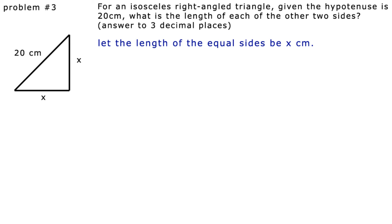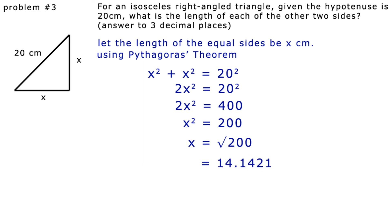And using Pythagoras' theorem, we have x squared plus x squared equals 20 squared. So 2x squared equals 20 squared. So 2x squared is equal to 400. Dividing both sides by 2, x squared is equal to 200. So x is equal to the square root of 200, which equals 14.1421. To three decimal places, that's 14.142.